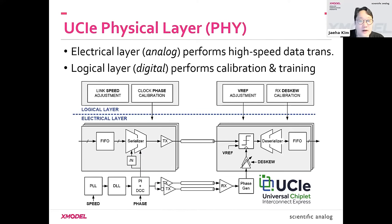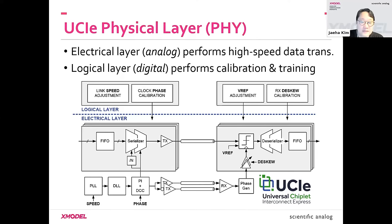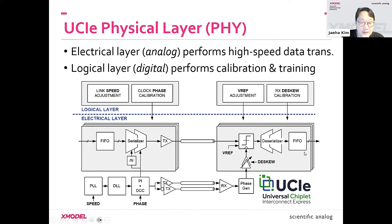The UCIe physical layer is made of two sub-layers: the electrical layer and the logical layer. The electrical layer consists of analog circuits performing high-speed data transmission through an actual channel — such as interconnects in an interposer or through-silicon vias. It includes FIFOs, serializers, and drivers to transmit data through the channel, plus a receiver, deserializer, and FIFO on the other side to recover data. Clocking circuits such as PLLs and DLLs trigger these circuits with correct timing.